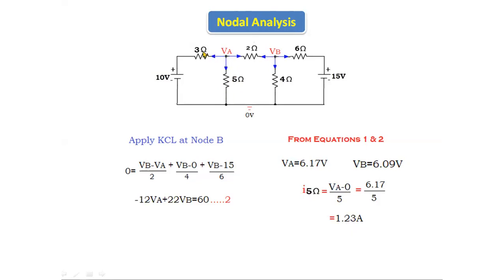Using nodal analysis, when there are two nodes we follow this procedure to calculate current through a particular resistor. In the previous class we covered the case of only one node. Today we covered how to write nodal equations when there are two nodes, find the unknown voltages, and calculate the required current. We will discuss further problems in the next class.